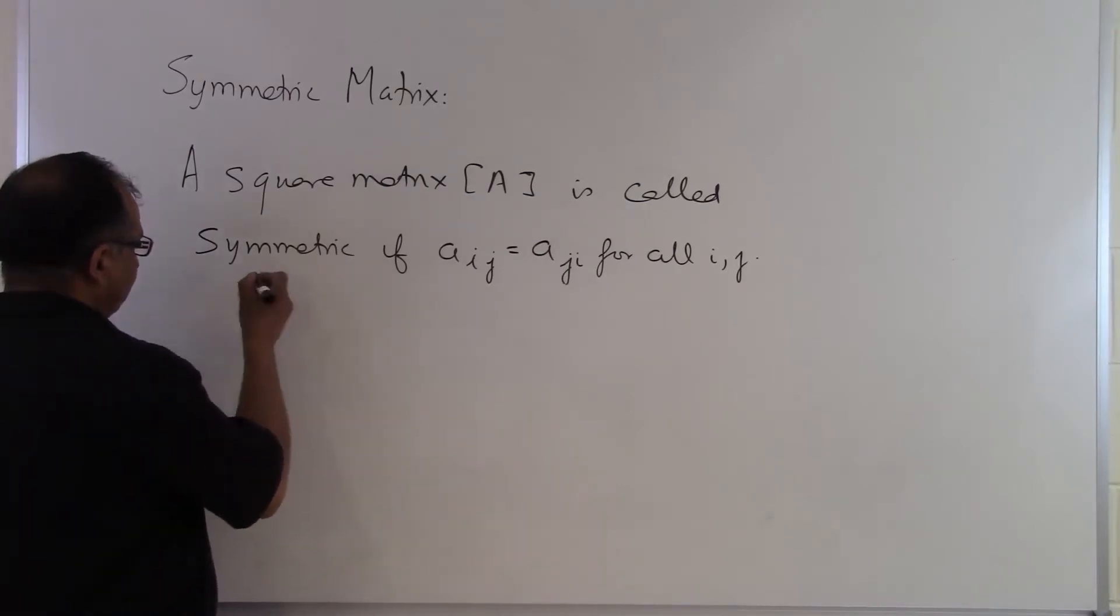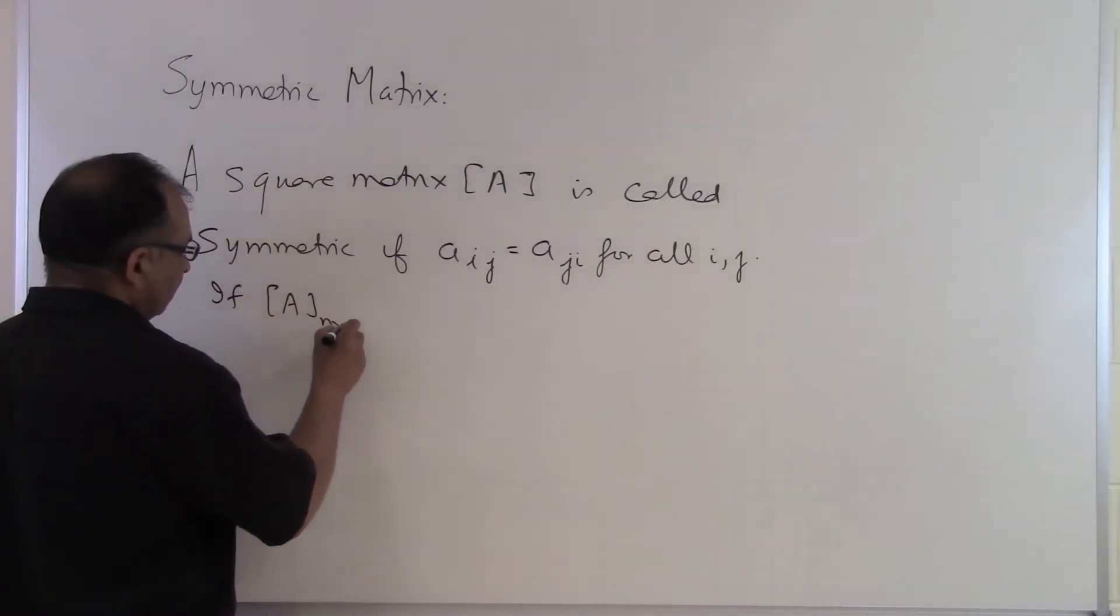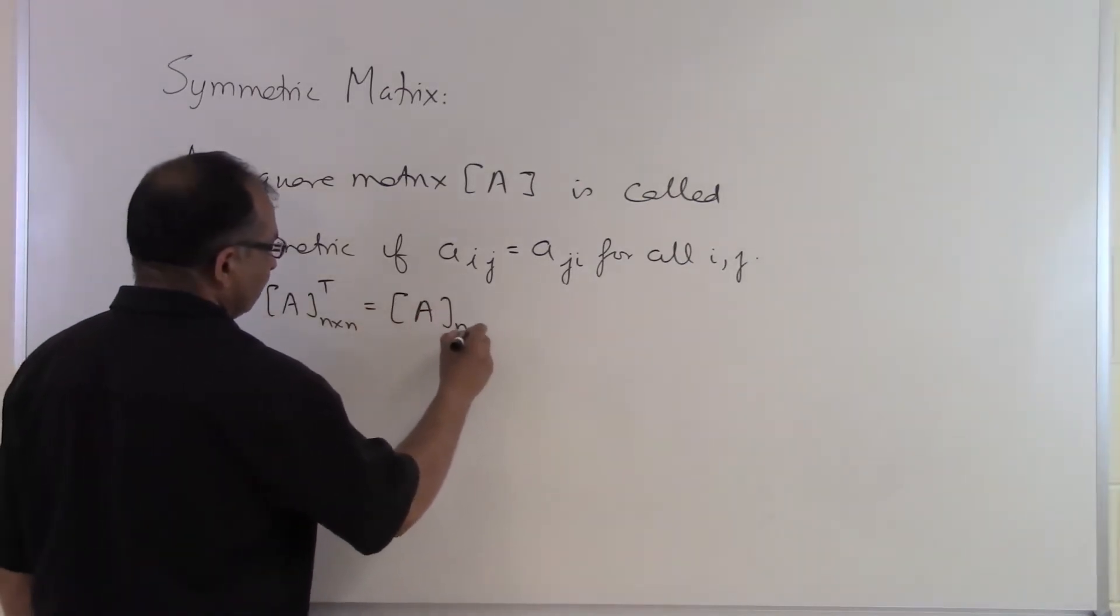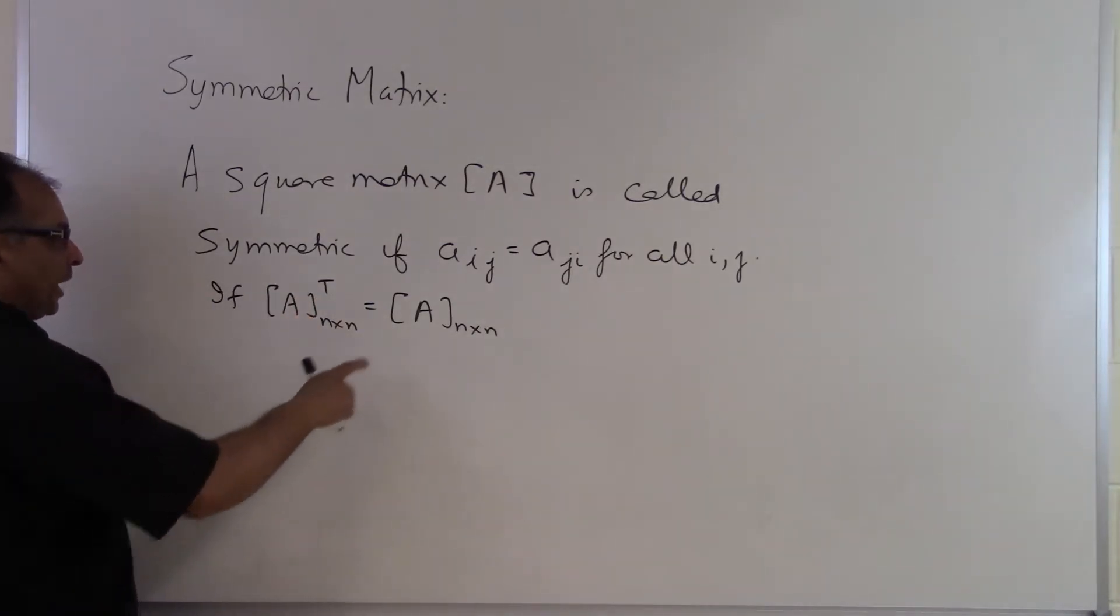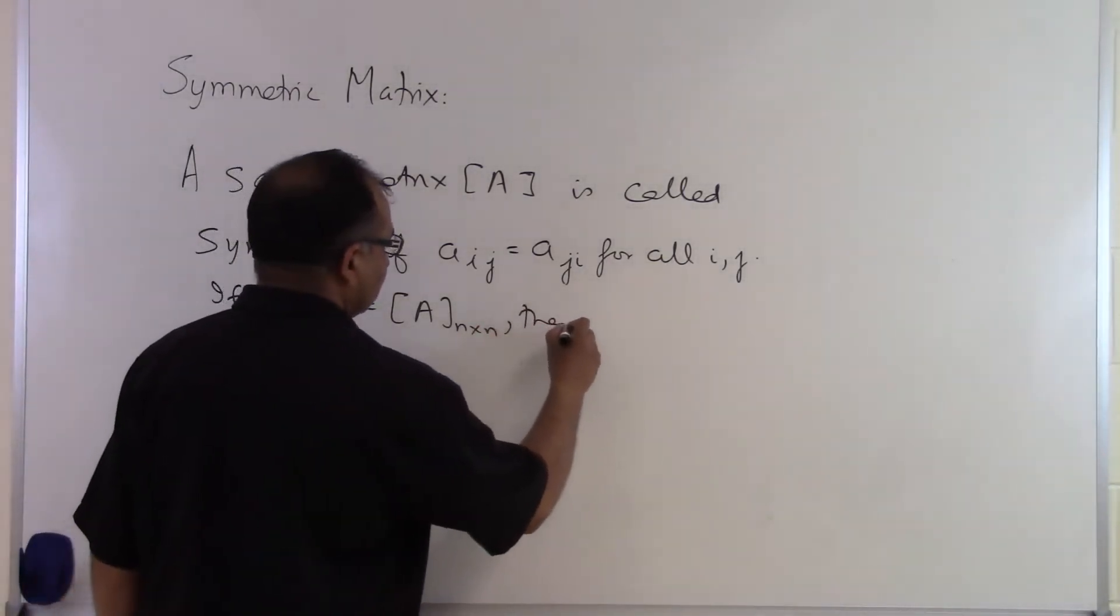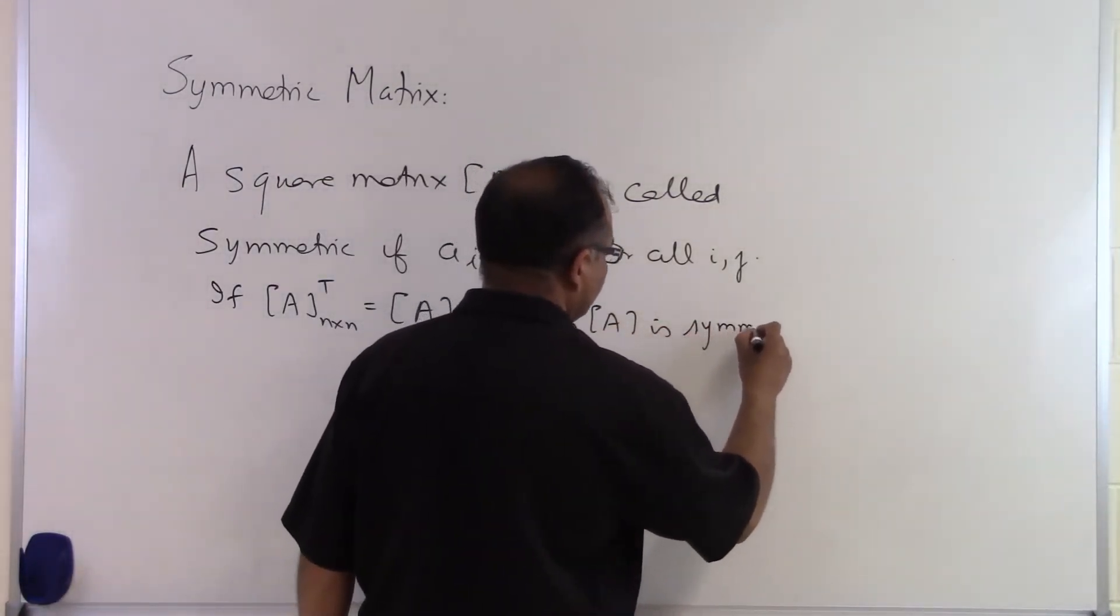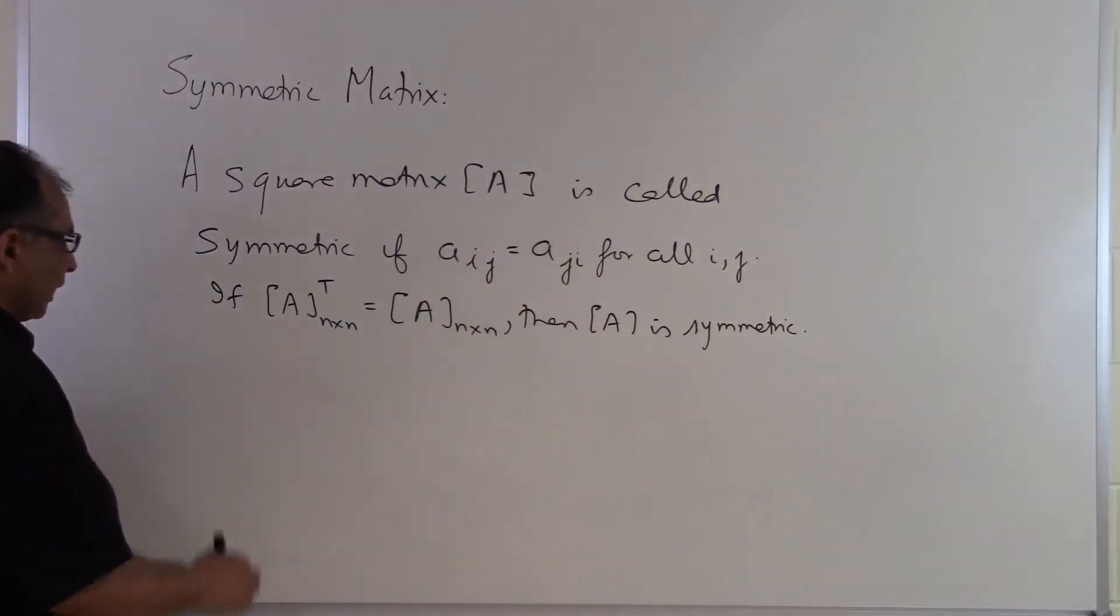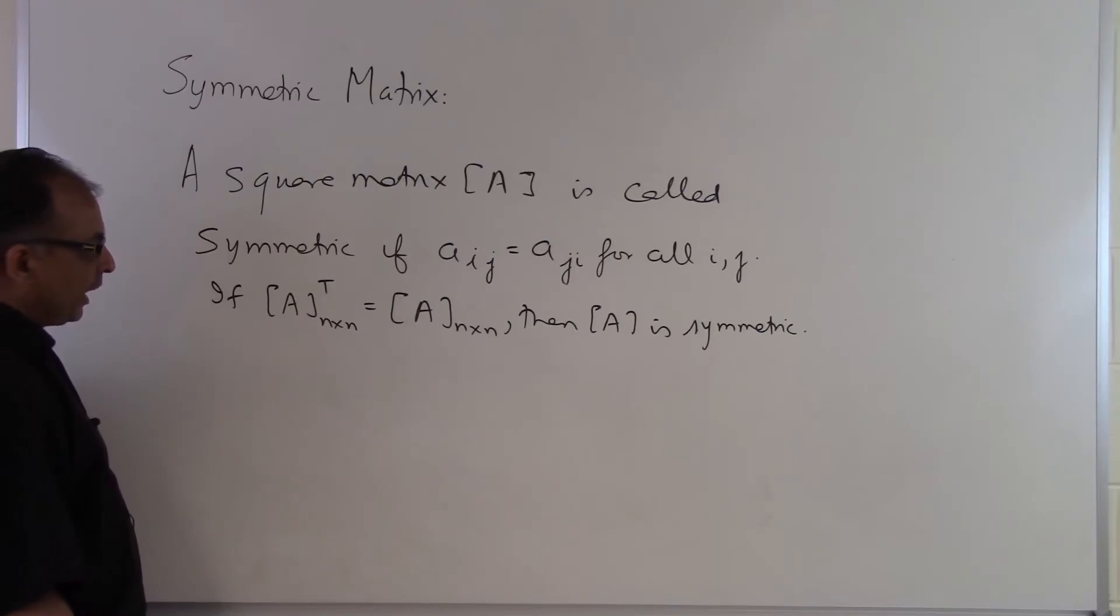We can also look at it this way, so it's another definition: if A is a square matrix transpose is same as the matrix itself. So if we have an n by n matrix, a square matrix, and we take the transpose of that and it's the same as the matrix itself, then A is symmetric. This is an alternate definition which means the same thing as the previous definition, but some people like to look at this definition that if I take a transpose of a square matrix it's same as the original matrix, then A is considered to be symmetric.